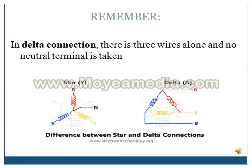Here you can observe the difference between star and delta connection. In star connection, there is a neutral terminal, whereas in delta, there are three wires alone. No neutral terminal is taken.